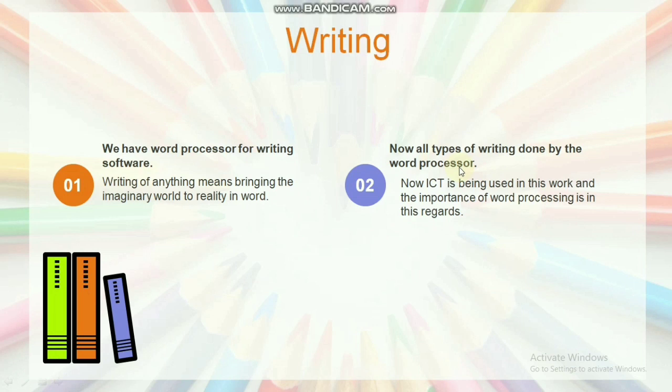Now, ICT is being used in this work and this is the importance of word processing in this regard. We have word processor for writing and this software can be used on our desktop, laptop, and smartphone. The story of human beings started with the art of writing to communicate their thoughts and ideas and convey their imagination to others.